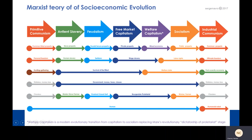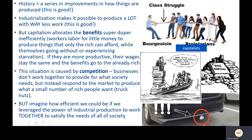This leads us to Marx's view of history and change. Marx sees history as a series of improvements in how things are produced — first the Neolithic Revolution when we learned how to farm, and then the Industrial Revolution when we can use machines to make things more easily. Industrialization makes it possible to produce a lot with way less work, and Marx has no problem with industrialization — he actually thinks it's a great thing. The problem for Marx is capitalism, the economic system. Capitalism allocates the benefits of industrialization super inefficiently — workers labor for little money to produce things that only the rich can afford, while themselves going without or experiencing starvation.